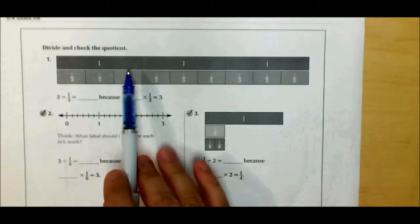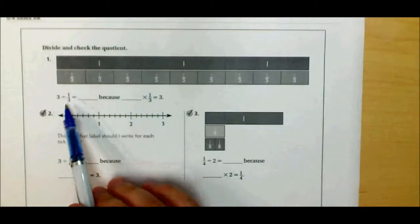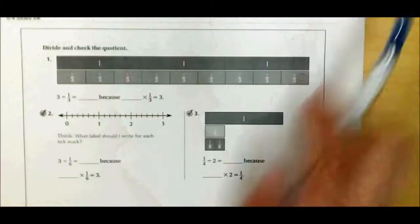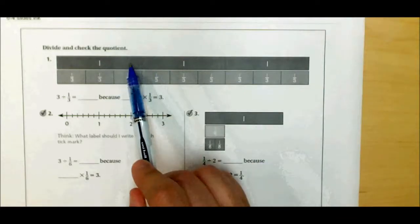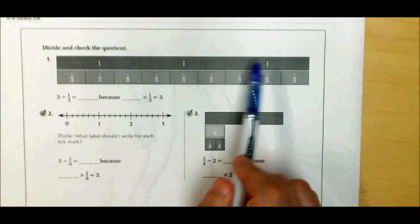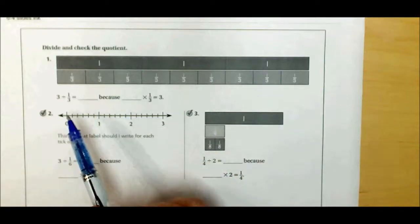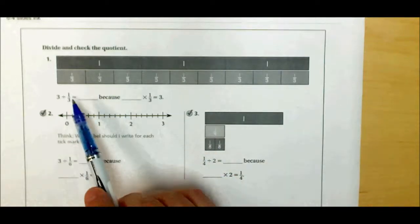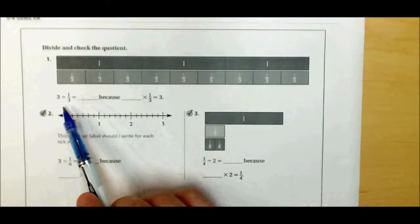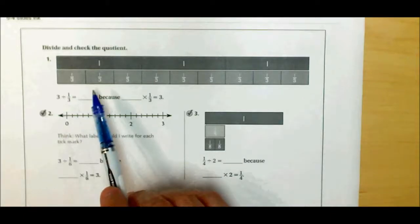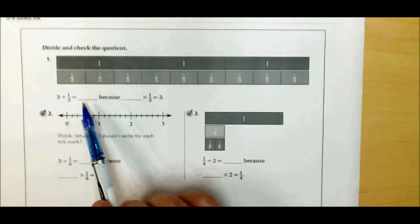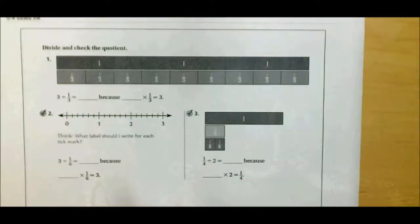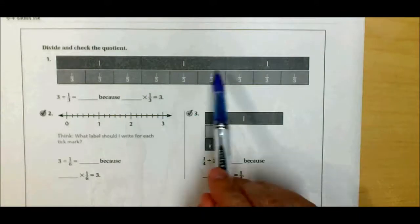So the first one is 3 divided by 1 third. That can be viewed with fraction strips. Here's 3 wholes. So that's 3. And then when I divide a whole number by a fraction, what we're saying is, in this case specifically, I have 3 of something, and I'm going to cut each one of those into thirds. And so how many am I going to have total when I'm done?